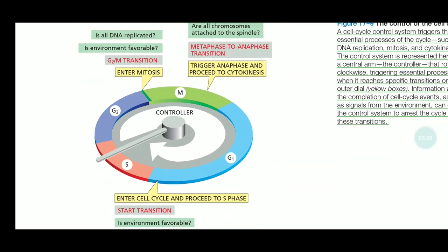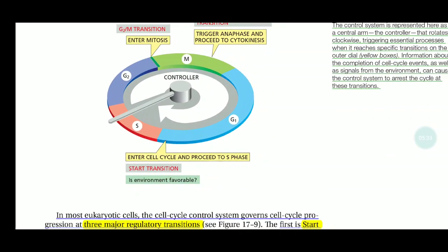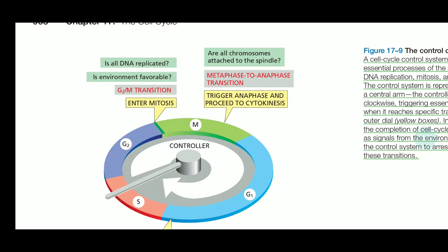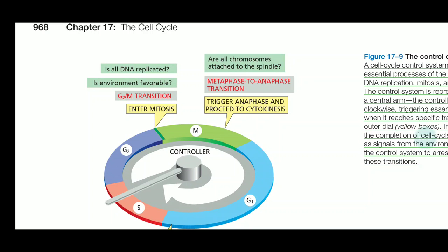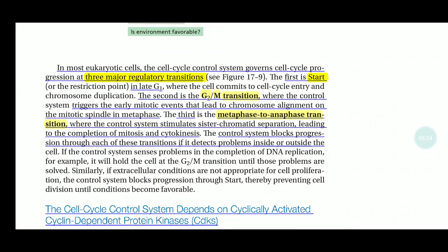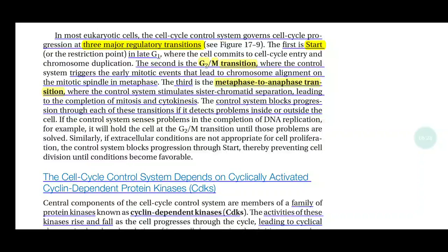At the Start checkpoint, it is checked whether the environment is favorable and sufficient nutrients and growth factors are present. At the G2/M transition, it is checked whether the DNA has been completely replicated and whether any mutations or defects exist. At the metaphase-to-anaphase transition, it is checked whether all chromosomes are properly aligned at the middle region of the cell before separation. If chromosomes are not properly arranged, the cell cycle is halted. These three transitions — Start, G2/M, and metaphase-to-anaphase — are important.